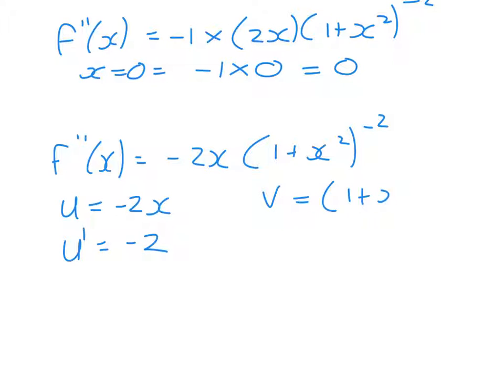v equals (1 plus x²)^(-2), and if we differentiate that, we'll get -2 times the differential times the bracket to the power of -3.